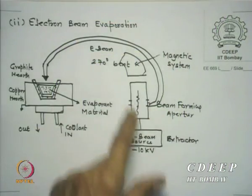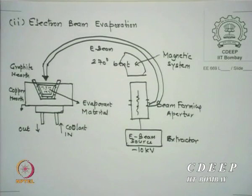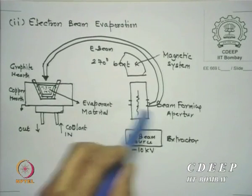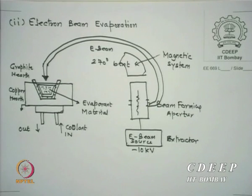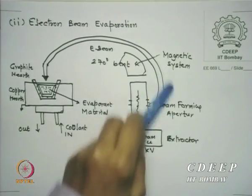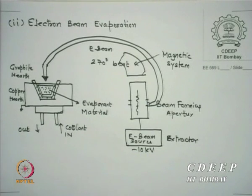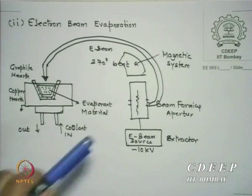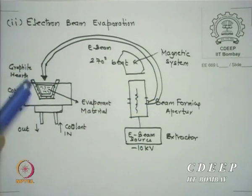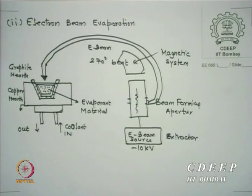This electron beam — some people have the electron beam coming from the vertical region itself. The system I've used was a slightly different version. This electron beam, accelerated by a potential of 10 kV and therefore having 10 keV energy, is focused at 270 degrees and directed into a crucible which has a graphite hearth. The material you want to evaporate is placed there — it can be pieces, powder, or wires.